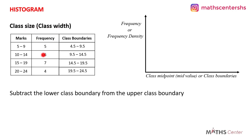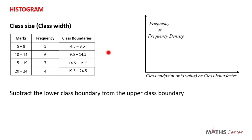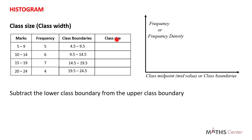Subtracting lower from upper class boundary for each interval: 9.5 minus 4.5 = 5, 14.5 minus 9.5 = 5, 19.5 minus 14.5 = 5, and 24.5 minus 19.5 = 5. As you can see, the class size of all the intervals is the same.